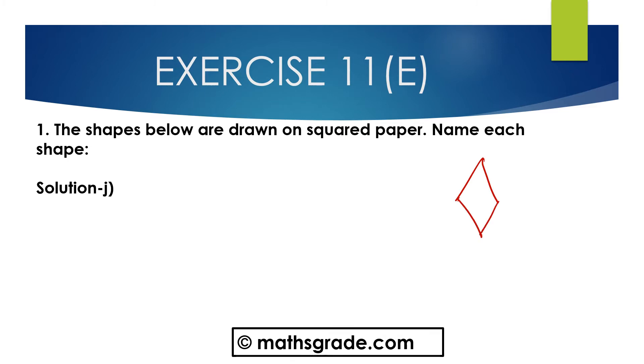In this shape, all four sides are equal but each angle is not equal to 90 degrees, and this is the shape of a rhombus.